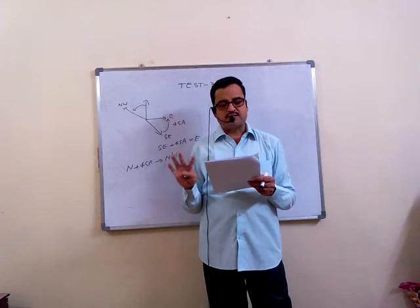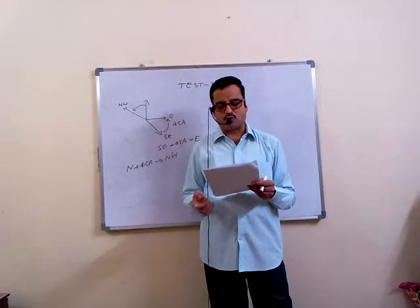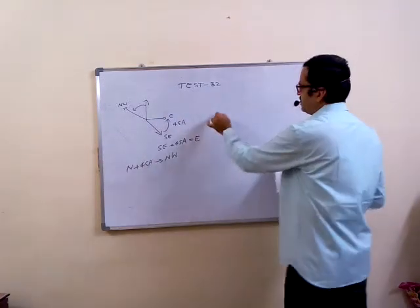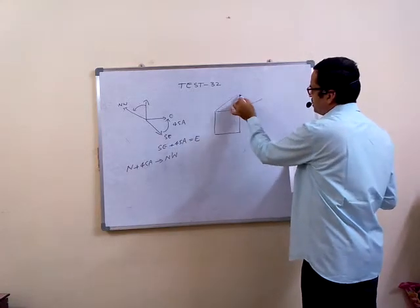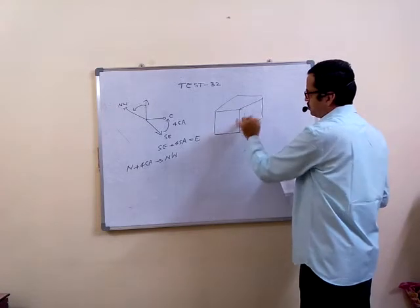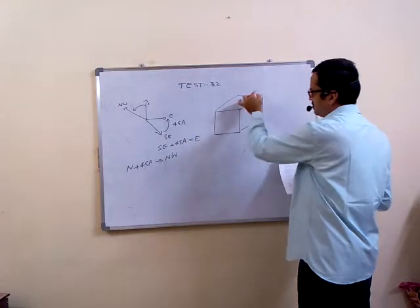Second one. A dice is numbered from 1, 2 to 6 in different ways. If 1 is adjacent to 2, 3, and 5, then which of the following statement is necessarily true? Let us first of all put the dice. A cube has got six faces - 1, 2, 3, 4, 5, 6.